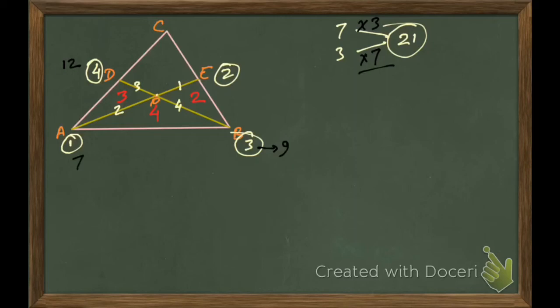So at point B we will be having mass 9 and at point D we will be having mass 12. 12 plus 9 is 21 here. And here we have 7 and here we have 14. 7 plus 14 is again 21 here.